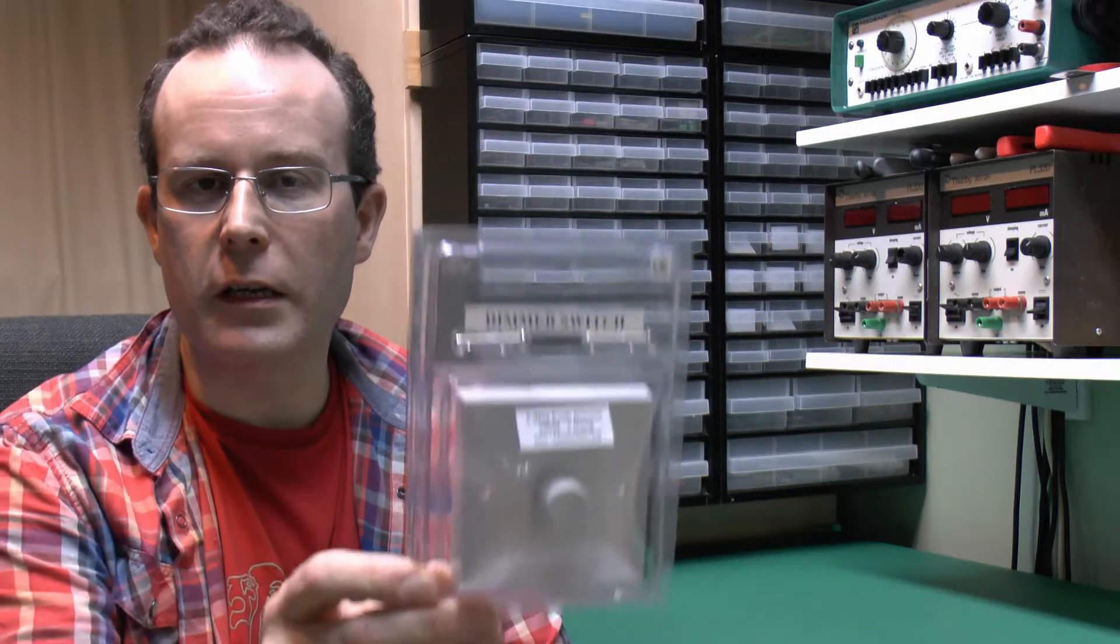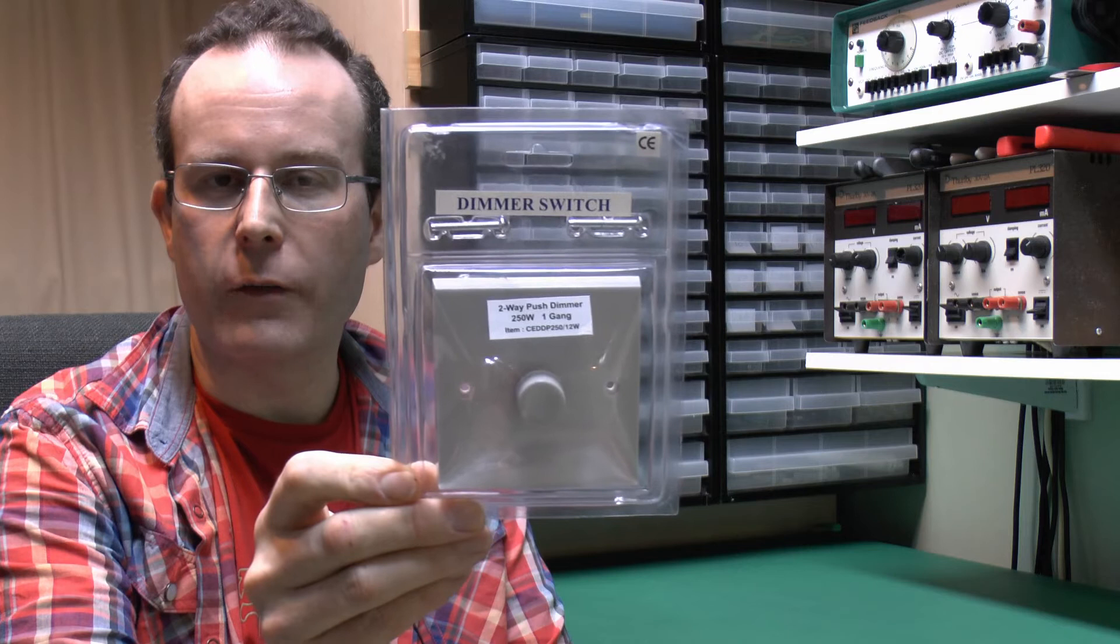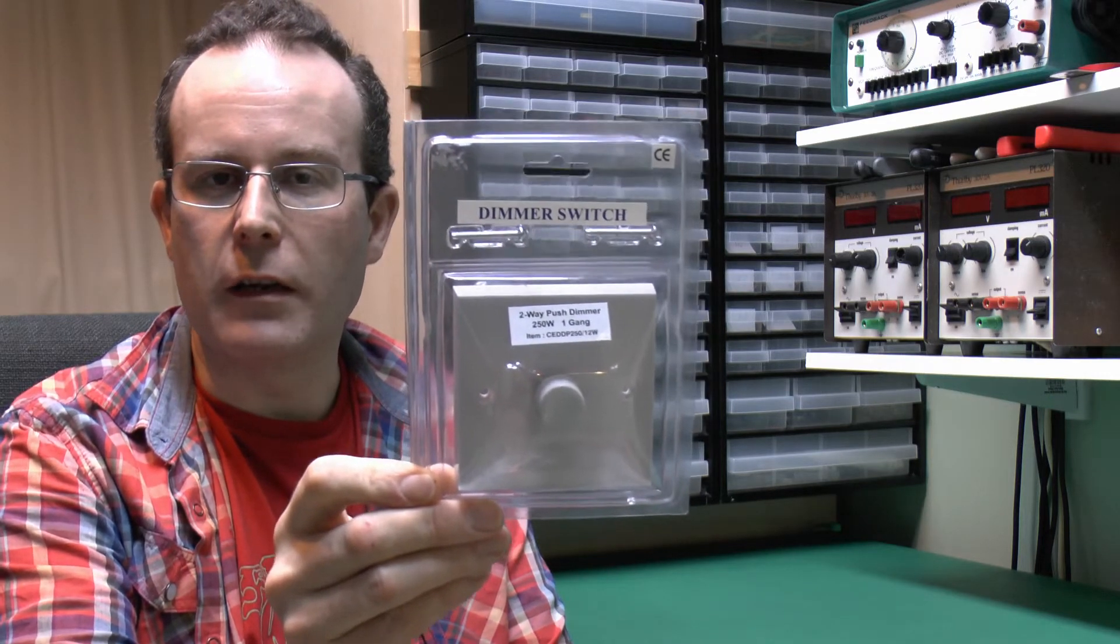Hello, this is JW and this is a normal dimmer switch. In this video I'm going to hack this switch to have a separate undimmed output alongside the existing dimmed output. This is for a set of halogen lamps which need to be dimmed and a set of fluorescent tubes which can't be dimmed and therefore just need to be switched on and off in conjunction with the other lamps.